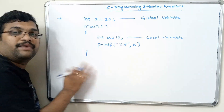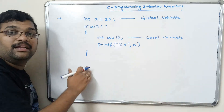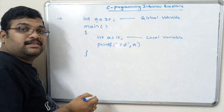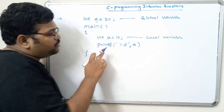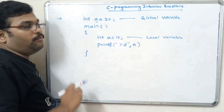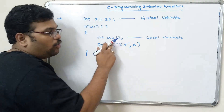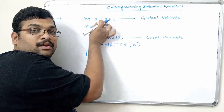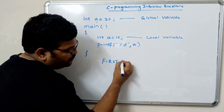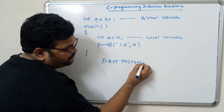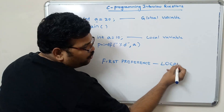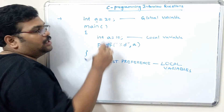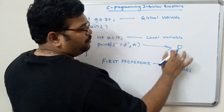Global variables can be accessed in every function — main or user-defined. But the question is: if you print 'a' in the main function, which value is printed — the local or the global? The rule is: if local variables and global variables share the same name, the first preference will be given to the local variable. So the output will be 10, not 20.